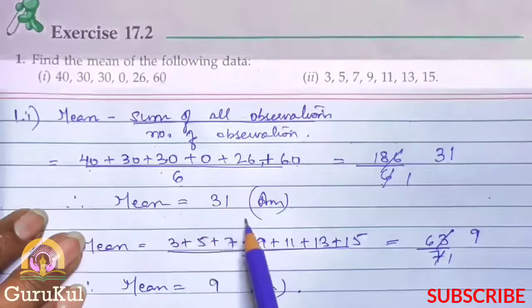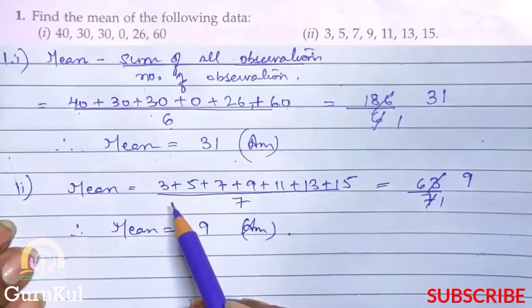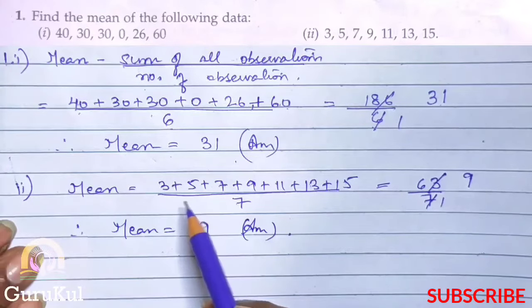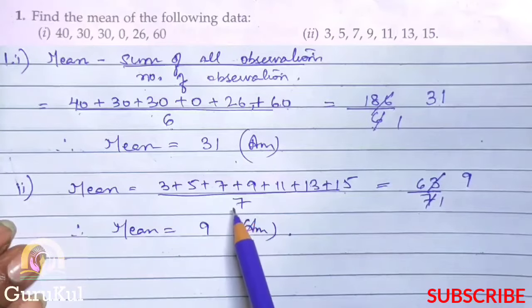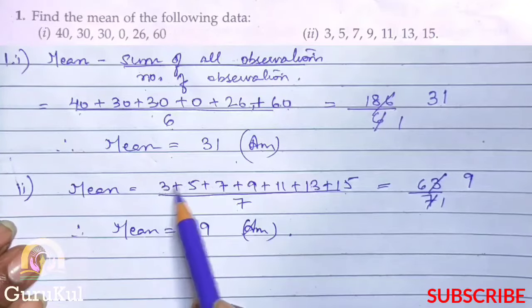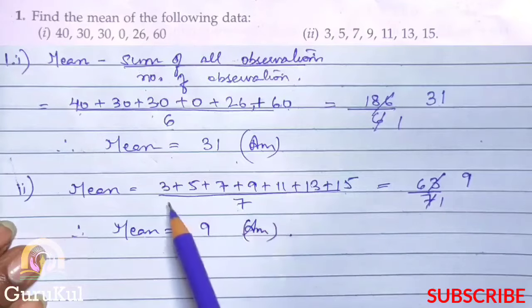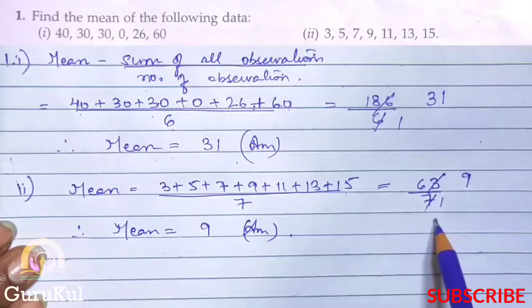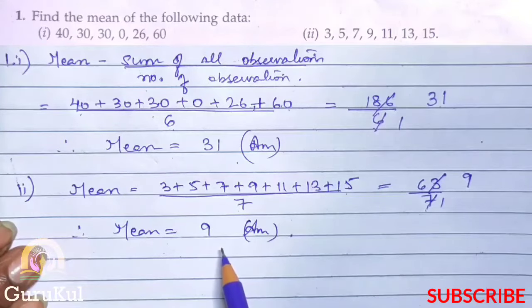Therefore mean is 31. Second part: The observations are 3, 5, 7, 9, 11, 13 and 15. So according to the formula we have to add all of them divided by number of observations. Here number of observations is 7. Here 1, 2, 3, 4, 5, 6 and 7. So we get 63 by 7. When reduced the answer is 9. So the mean is 9.